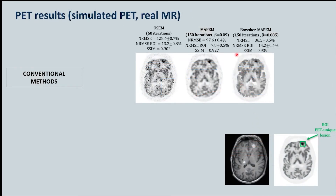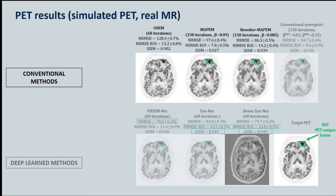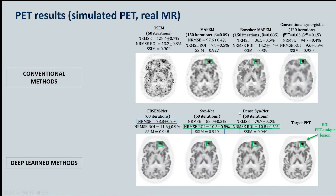There again is the problem shown earlier — loss of uptake in that PET-unique region. With the deep-learned synergistic methods, we do better in that region of unique information in the PET, whilst retaining a lot of the benefits in the global area of the brain.